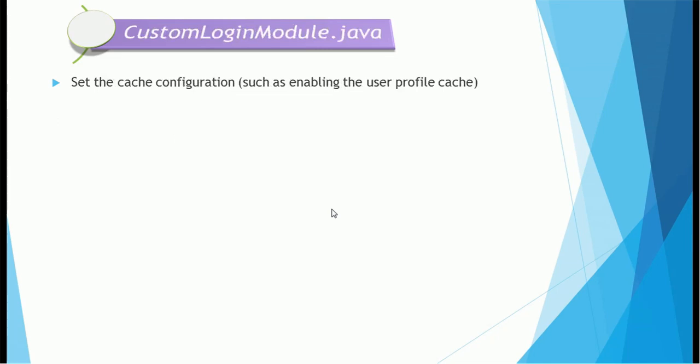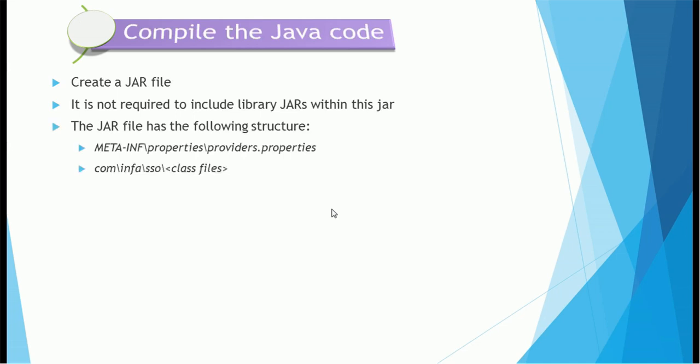Another class required is the Custom Login Module. This is normally used for setting the cache and some additional properties. Finally, we'll see how to create a JAR file. It is not required to include the library JAR files, but even if you include them it will not create any problem. The JAR file has the following structure: META-INF, then a properties provider dot properties file, and the class structure will be like com.info.sso with the class files.